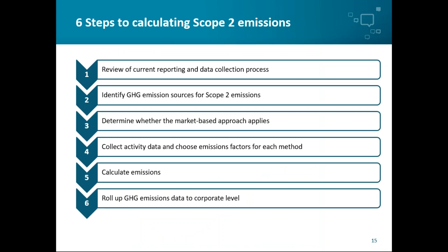Here are some steps we recommend towards calculating your scope 2 emissions. Firstly, carry out a review of your current reporting and data collection processes. Then identify the GHG emission sources for your scope 2 emissions and determine whether the market-based method applies — reviewing whether energy attribute certificates, energy contracts, or supplier-specific emissions data are available. Then collect your activity and consumption data and select emissions factors for each method. Finally, calculate your emissions and aggregate them up to the corporate level.